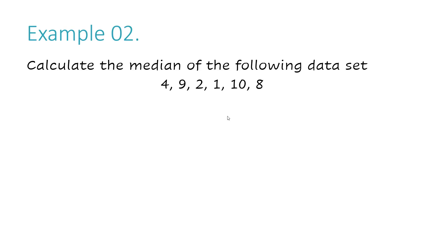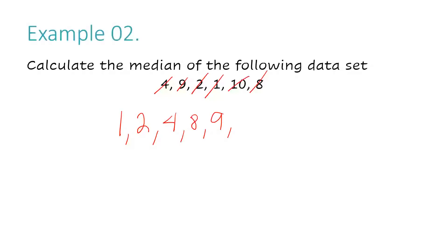I'm going to order these numbers from least to greatest. Looking at my data set, I can see that 1 is my smallest number, so I'm going to cross it off and write it. My next smallest number is 2 — cross it off and write it. My next smallest number is 4 — cross it off and write it. My next smallest is 8 — cross it off and write it. My next smallest is 9 — cross it off and write it. My last number is 10. I like to count to make sure I didn't miss a number: I have 1, 2, 3, 4, 5, 6 numbers on top and 1, 2, 3, 4, 5, 6 numbers at the bottom, so I did it right.